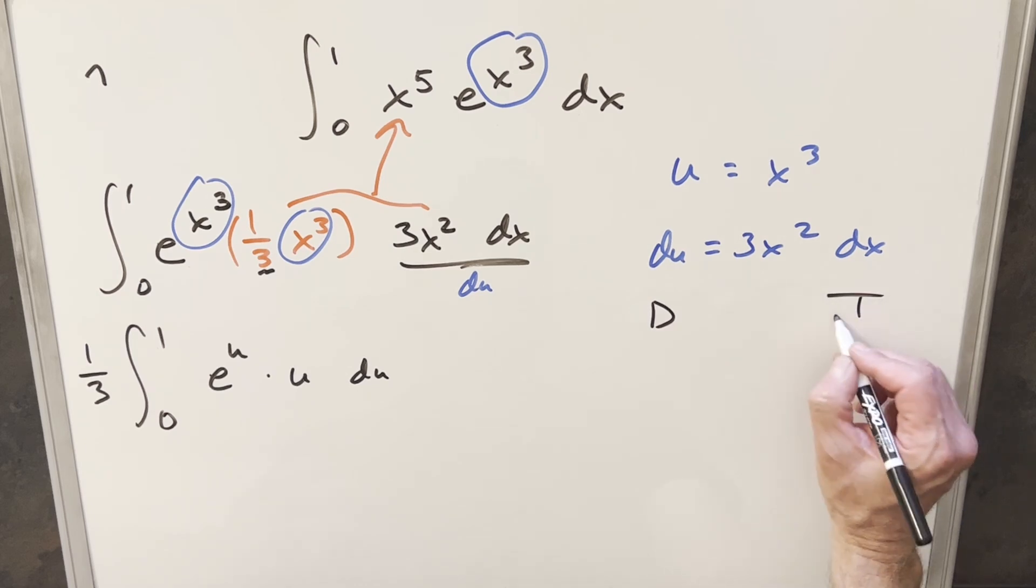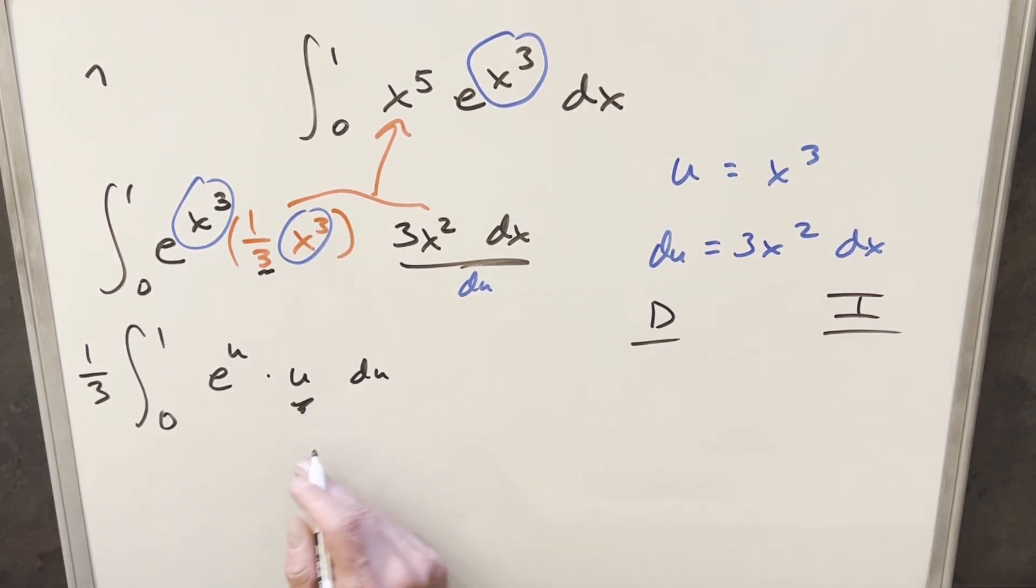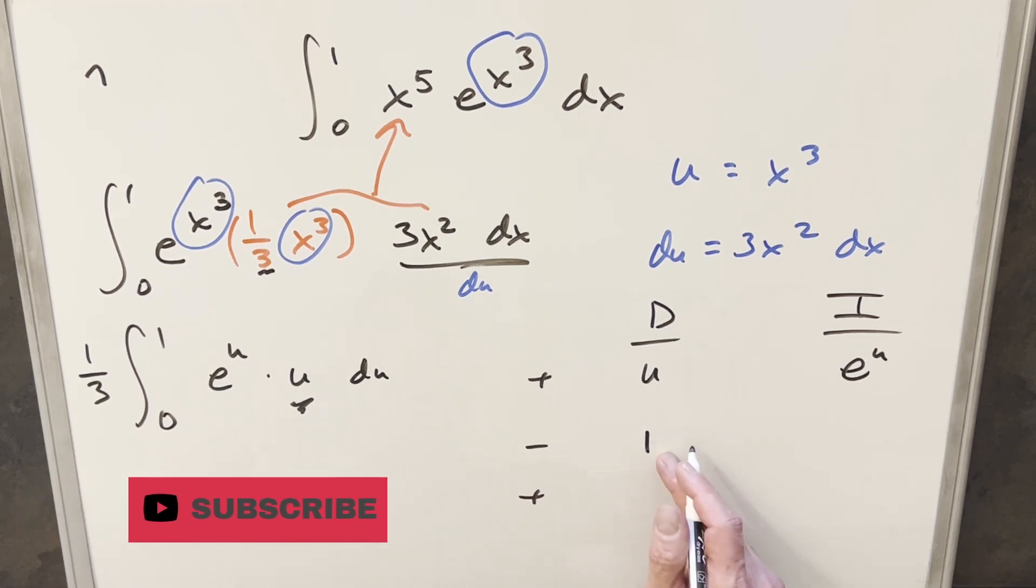We'll come over here and do this using the DI method or tabular integration. I'm going to want to differentiate u because that's going to differentiate all the way down to 0. So we'll differentiate u, integrate this, plus, minus, plus. Coming over here, derivative of u is just 1. Derivative of 1, that's just 0.